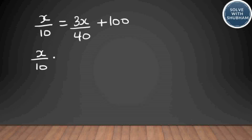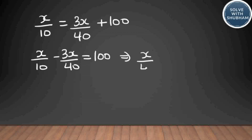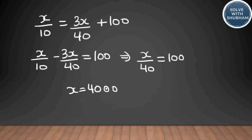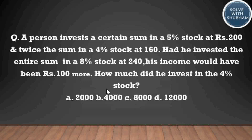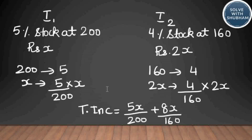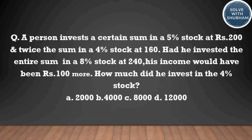Solving x/10 − 3x/40 = 100 gives x = 4000. The question asks how much he invested in the 4 percent stock, which is 2x = 8000. The answer is option C. We just need to understand the terminologies clearly to get the answer.